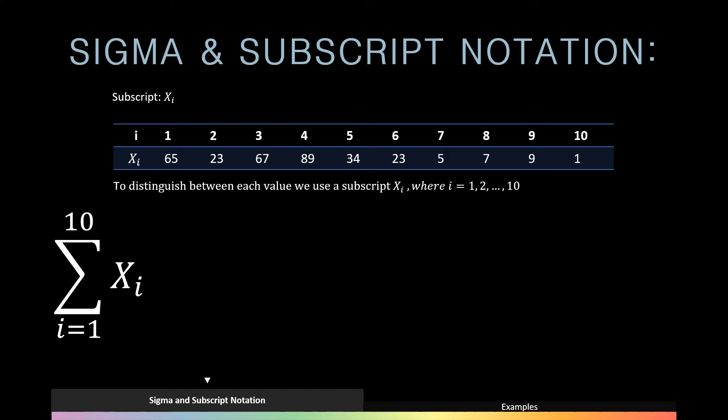Now if we wanted to sum up all these values, we would simply write the summation of Xi from i is equal to 1 up until 10, because 10 is our last index. And this translates to x1 plus x2 all the way up until plus x10, which is simply 65 plus 23 plus 67 all the way up until plus 1, which is equal to 323.